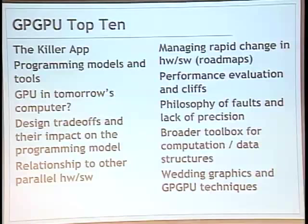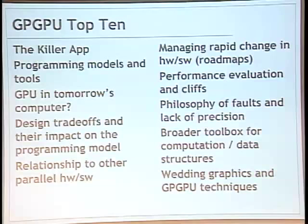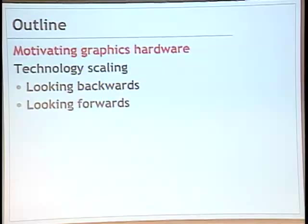Those are the big picture issues — good sources for projects since we don't have answers for them. Today we're going to talk about two major things: motivating graphics hardware (why is it built the way it is, why the task parallel model?), and technology trends — how things have scaled historically and going forward. The really important thing is not that technology changes, but how different things are changing differently.